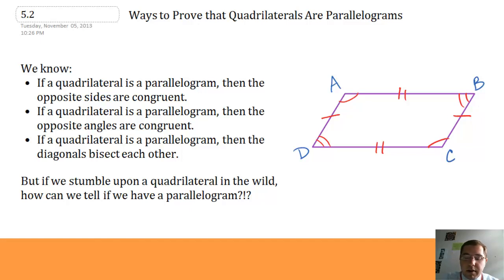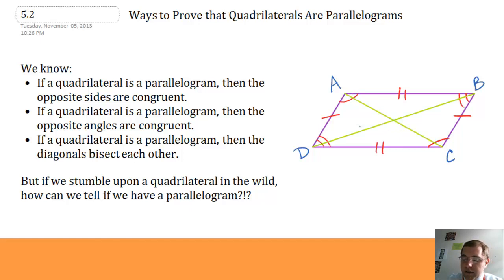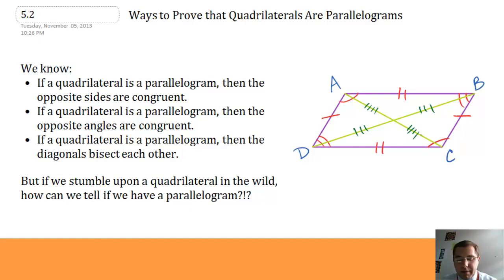And I also know that if I were to draw in the diagonals, the diagonals of a parallelogram bisect each other. So those two diagonals must cut each other in half. This would have to equal this, and this would have to equal this. They bisect each other.